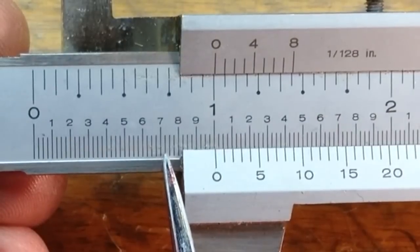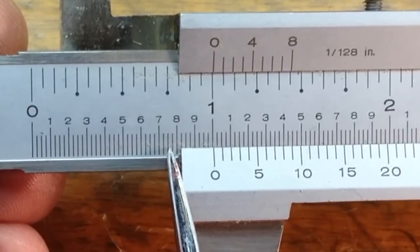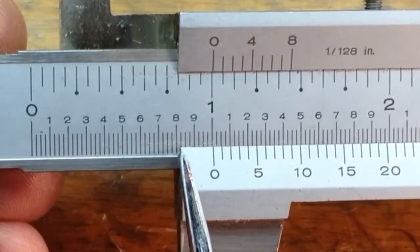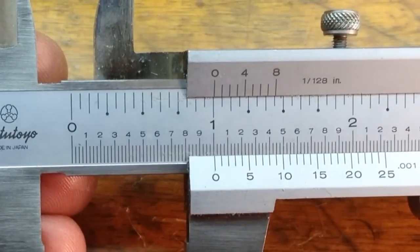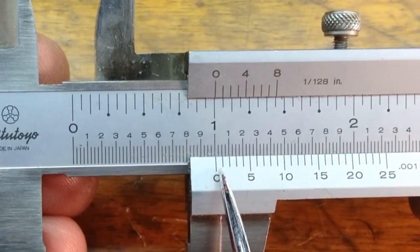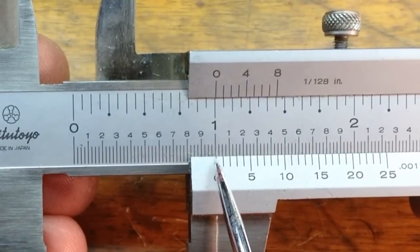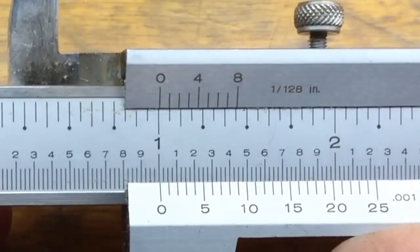Now, as you can see here, the main scale is broken down into three lines, and each one is 0.25. And then on the sliding scale, it is also broken down into 0.25, which will let you read your measurement a little bit more accurate.